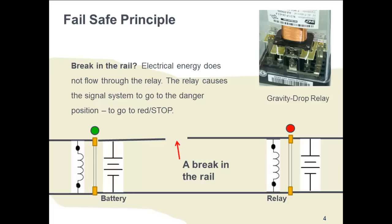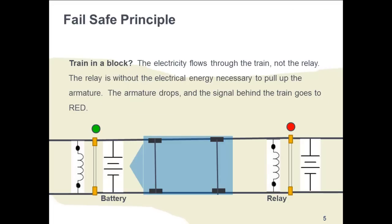If anything causes the electricity not to flow, the signaling system changes to red, or stop, to prevent trains from entering the block where the break occurred. The signal system changes because the relay is nothing other than an electrical magnet. If electricity flows through the loop, the relay lifts up. If the energy ceases to reach the relay, gravity pulls the armature down and the electrical contacts turn the signal to red. So gravity is integral to the fail-safe system. The relays are gravity drop relays.